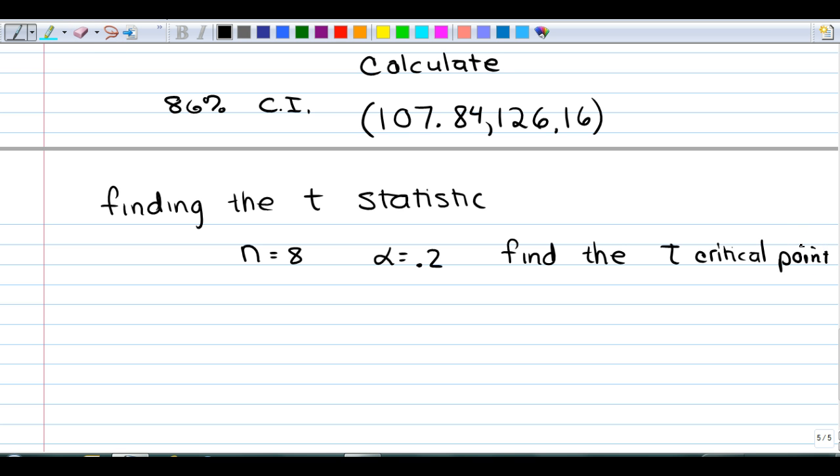This means if you were going to do this by hand, you would have x-bar plus or minus the t-critical point times the standard deviation divided by the square root of n. Well, the t-critical point, I call it t alpha over 2 and degrees of freedom. You need to know those two pieces of information.